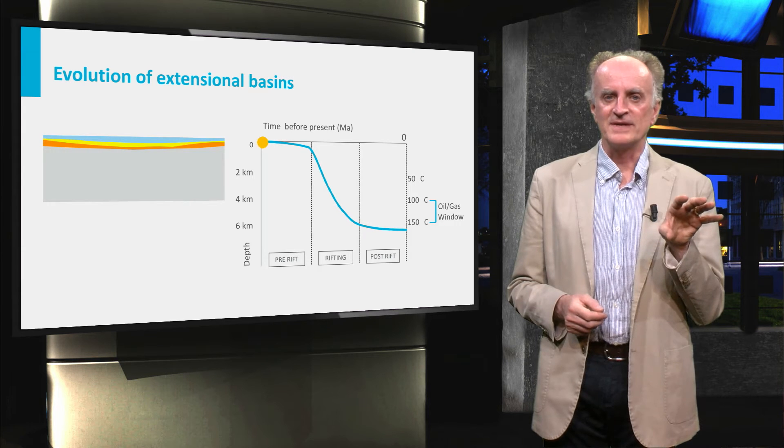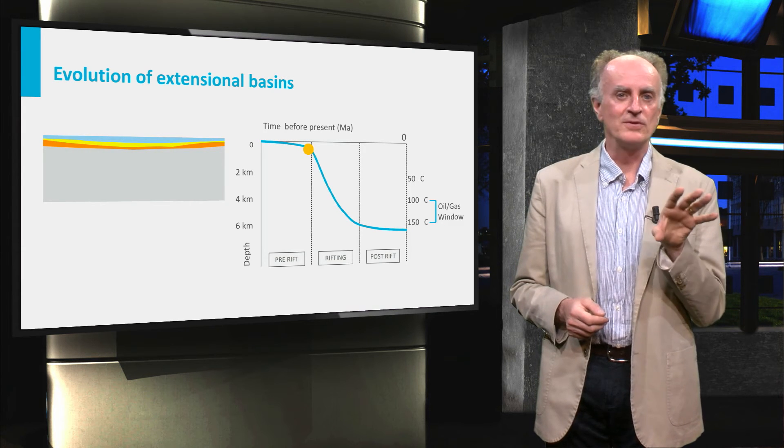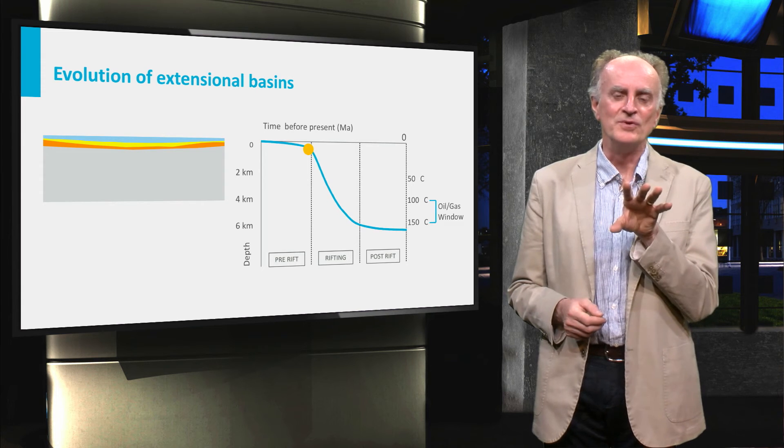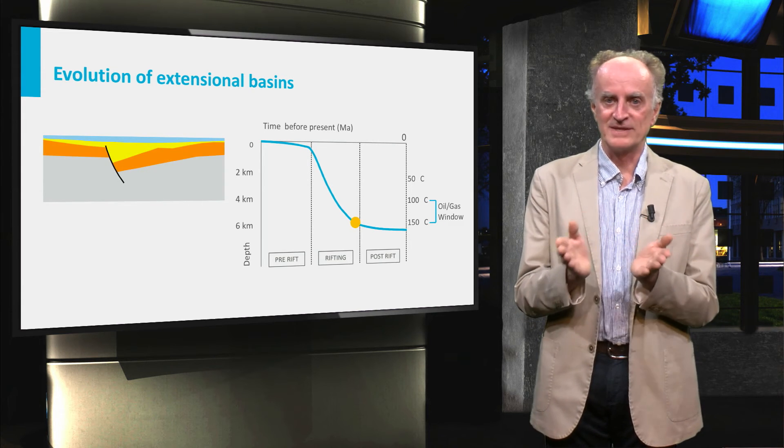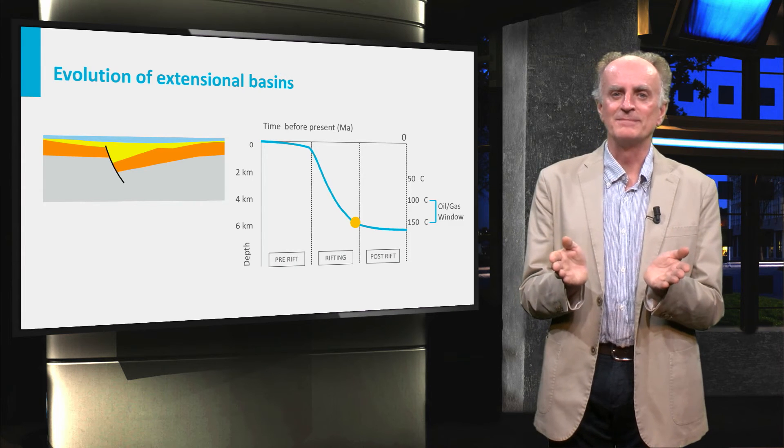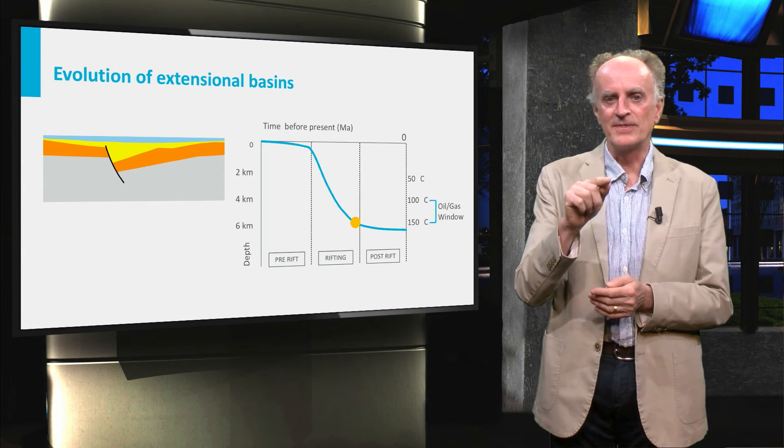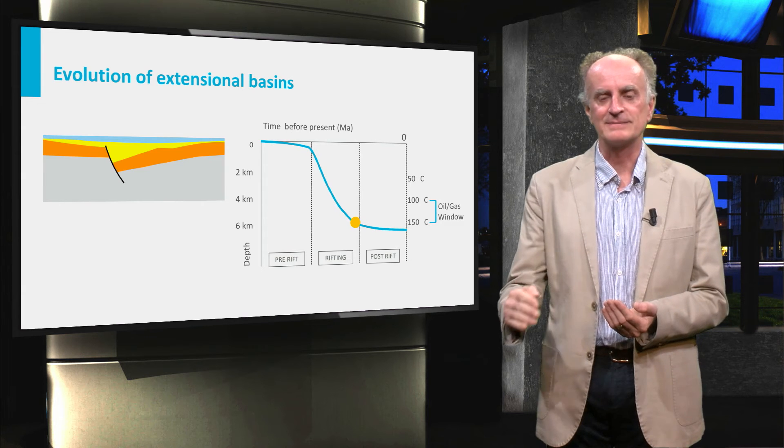Before the onset of rifting, not much happens—no faults, and subsidence is limited to non-existent. When extension starts, normal faults will develop, which open extensional basins and cause crustal thinning. Both concur in creating subsidence.